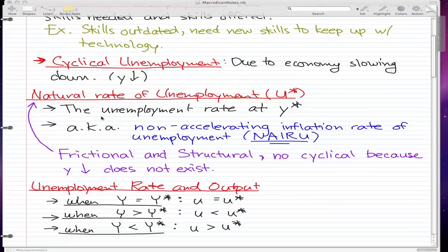Just a little thing about the natural rate of unemployment though, what happens is that only frictional and structural unemployment can exist in this natural rate of unemployment U star. No cyclical can happen because falling output does not exist, we're in equilibrium so we don't really have falling output.